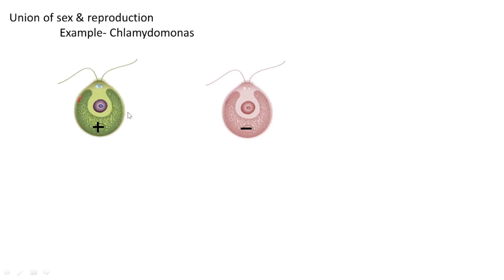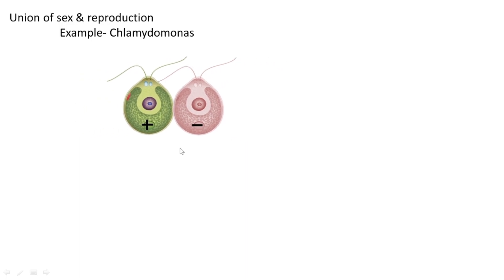Chlamydomonas is a haploid cell type with a plus mating type and a minus mating type. When these two different mating types meet, they come closer and recognize each other. Recognition happens with the help of the coiling and entanglement of their flagella — they touch each other and recognize each other.